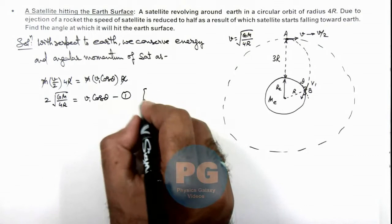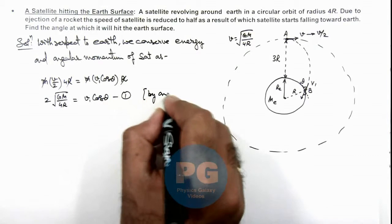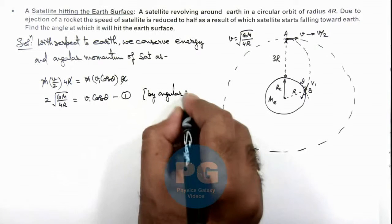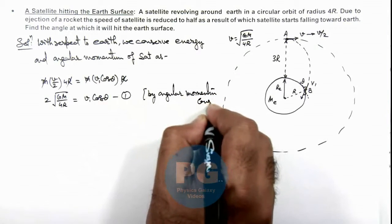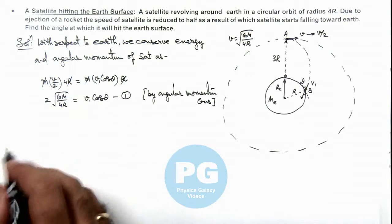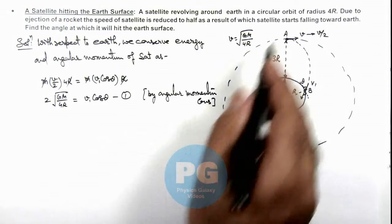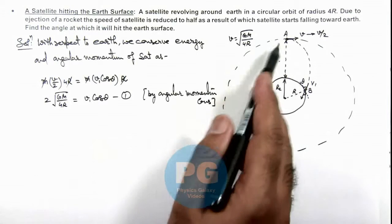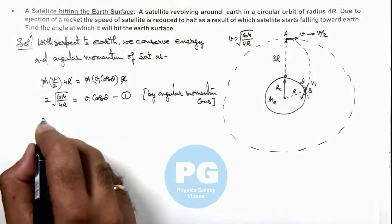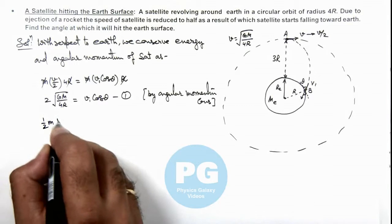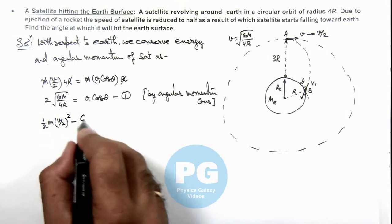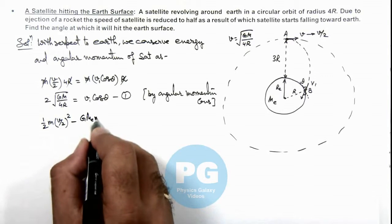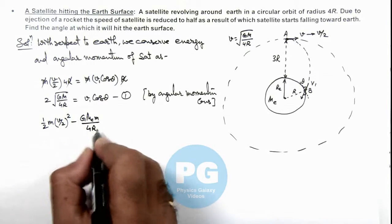Which we have written by angular momentum conservation. Similarly, we can write energy by conservation of energy at points A and B. At point A, kinetic energy is ½m(v/2)² - GMEm/4R.